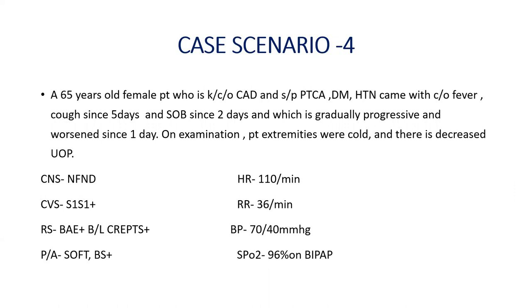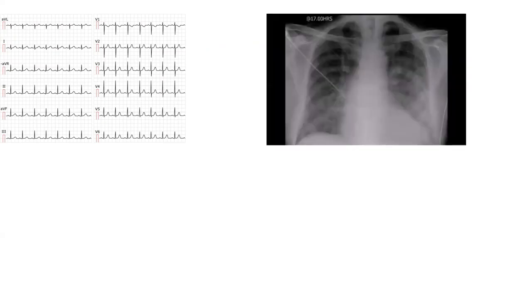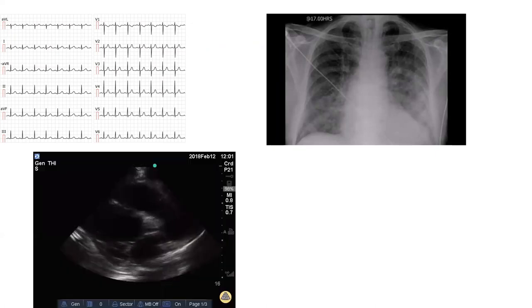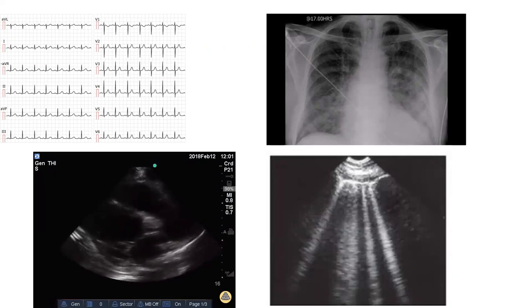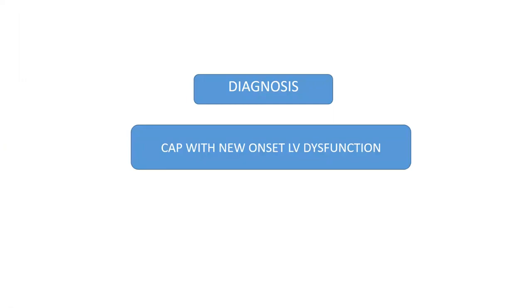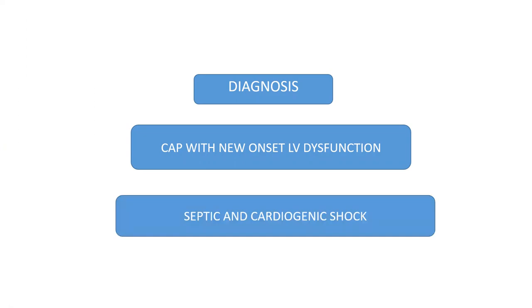Fourth scenario: a known cardiac patient presents with cough, fever, and shortness of breath for a couple of days. She is hypotensive, with crepts on lung examination, requiring BiPAP. The clinical scenario points towards pneumonia and sepsis but you cannot rule out a cardiac etiology given her background cardiac disease. ECG shows tachycardia; X-ray shows bilateral patches suggesting viral or other pneumonia. Her echo shows grossly compromised contractility, and lung ultrasound shows B-lines. Diagnosis: primary pneumonia with a new-onset LV dysfunction and cardiogenic stress — you need to know both conditions are present.